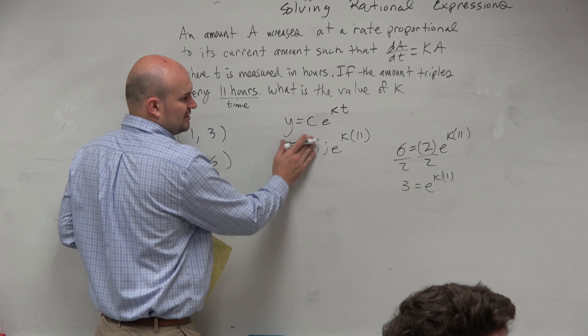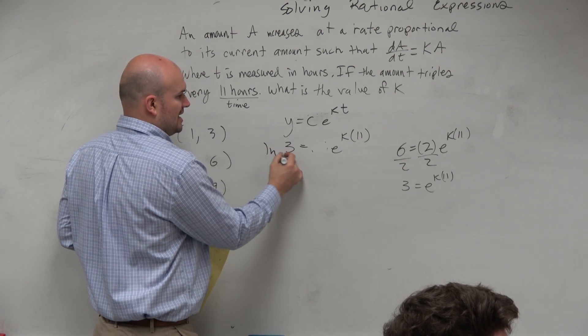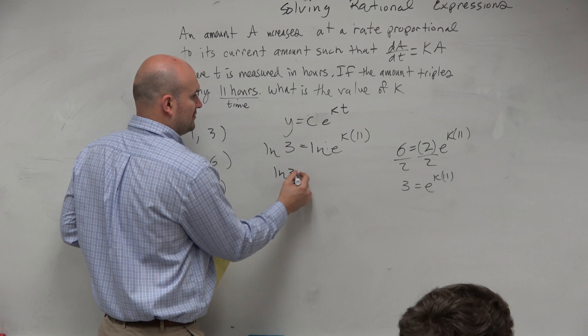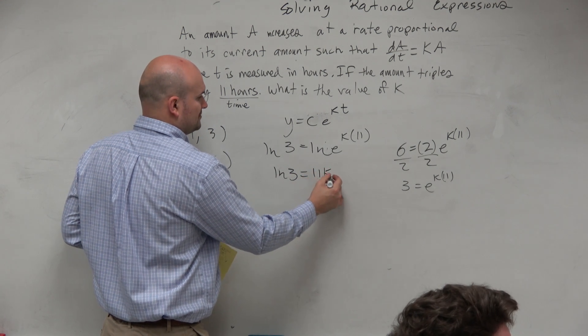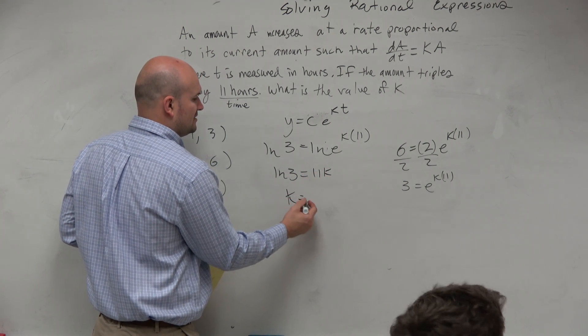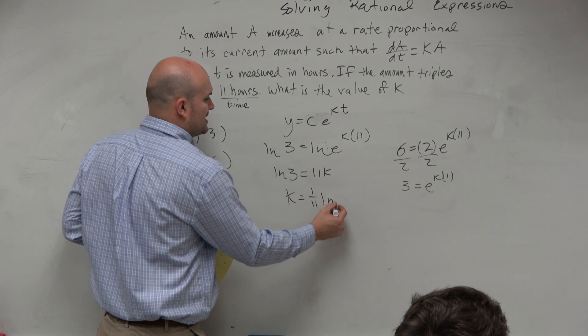So I really don't need to write the 1 there. I can just now take the ln of both sides. ln of 3 is equal to 11k. So therefore, k is equal to 1 eleventh times the ln of 3.